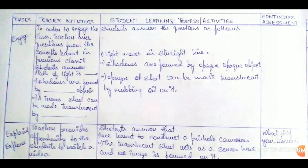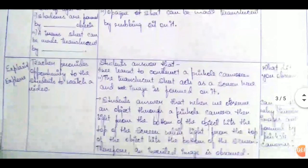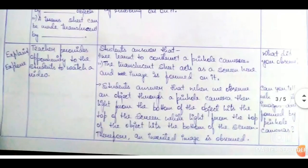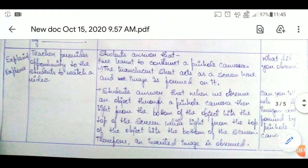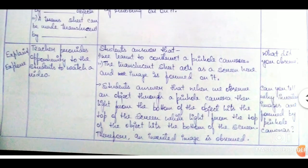Now we draw our table. This is a 5E lesson plan, so we have five phases: Engage, Explore, Explain, Extend, and Evaluate. We first start with Engage to get the students' attention, then move on to Explain and Explore.